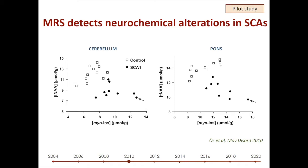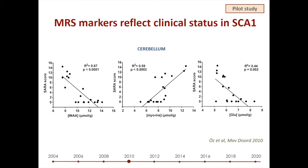The next question was whether these neurochemical abnormalities reflect clinical status. The answer was yes. We saw strong correlations between NAA, myoinositol, and glutamate — two neuronal and one glial marker — and the Scale for the Assessment and Rating of Ataxia (SARA), the most widely validated ataxia score, confirming these markers of neurodegeneration correlate with disease severity.